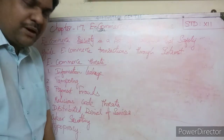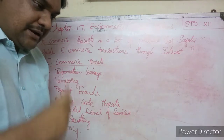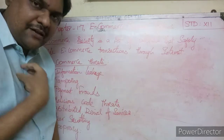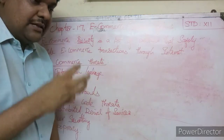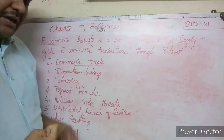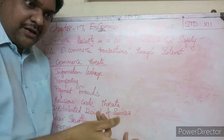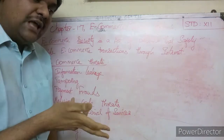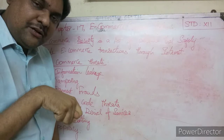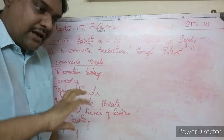The next threat is Tampering. Tampering means a hacker steals information exchanged between a buyer and a seller. For example, if a seller sends a payment document for two lakhs, the hacker can alter that amount — changing two lakhs to twenty thousand — and then send the modified document.